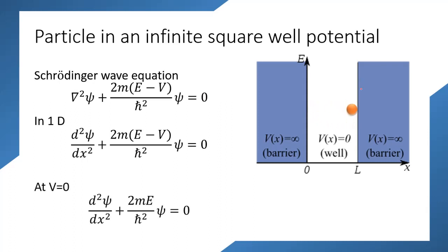We know that the potential inside the well — in which the particle is trapped — is zero. Therefore, substituting V = 0, our equation becomes: d²ψ/dx² + (2mE/ℏ²)ψ = 0. Does this equation look familiar to you?